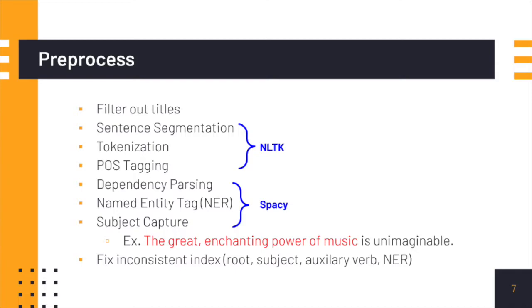We would also capture the subject by tracking down and searching in the dependency tree. For example, in this sentence — 'the great enchanting power of music is unimaginable' — we not only want to capture the token which is the subject 'music', but also the words that describe it, or in other words, the children of it. And lastly, we would also keep the index of root, subject, auxiliary verb, and NER to fix the inconsistencies of the index.